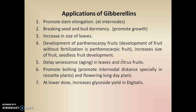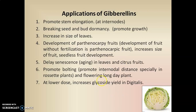Seedless fruit development can also occur through gibberellins. They also show delay in senescence, meaning they delay the aging of leaves and citrus fruits. Gibberellins also promote bolting, where bolting means promoting internode distance, especially in rosette plants like cabbage. Cabbage has very small internodes, and gibberellins increase the internode distance — this increase is called bolting.